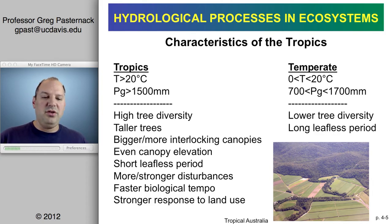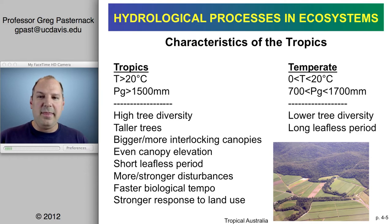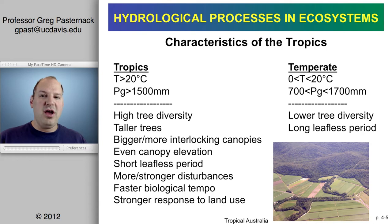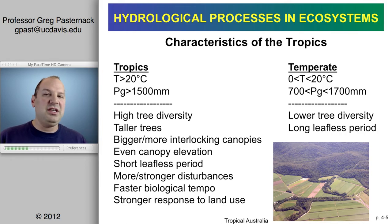Tropical forests definitely have more interlocking canopies, though at a more even elevation. There's a very short leafless period — you don't have the same seasons requiring leafless conditions. There are more types and higher-magnitude disturbances occurring more frequently. Overall, there's a higher biological tempo, just more turnover. High temperature and a lot of water creates a lot of weathering and changing conditions that drives significant biological change.